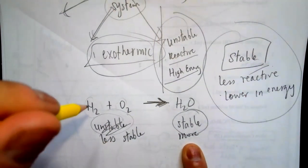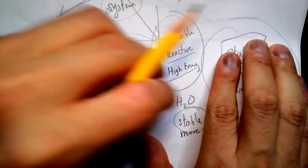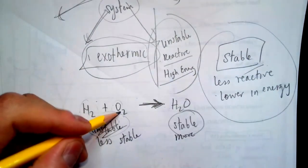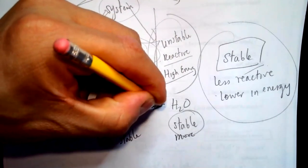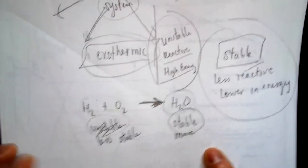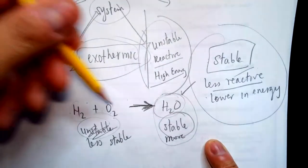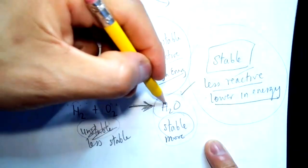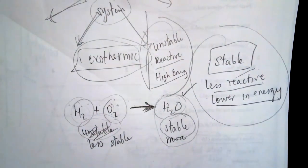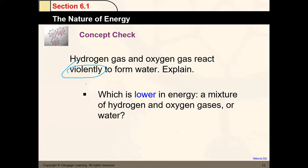In this case, hydrogen and oxygen combine violently to produce water molecules, meaning the water side is more stable. Water is less reactive and has less energy than hydrogen and oxygen. Lowering energy means more stable, and lowering energy also means less reactive. That's why it's important to know these terms.